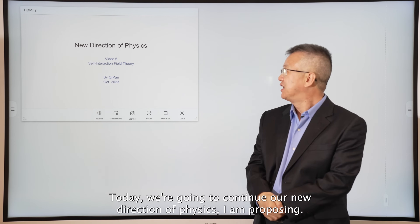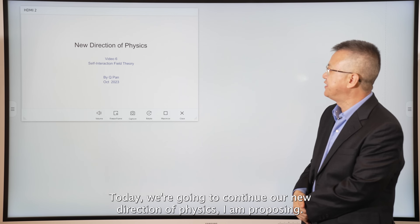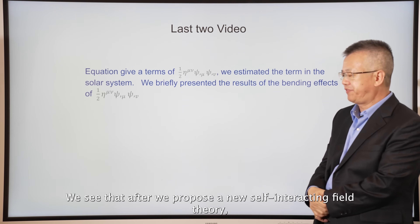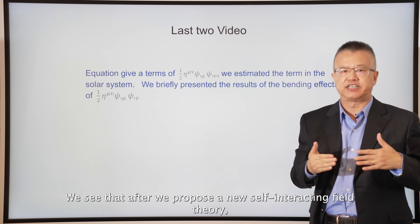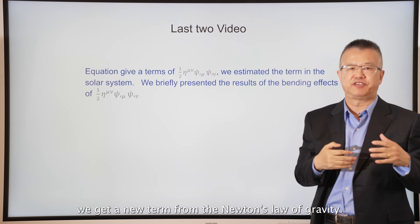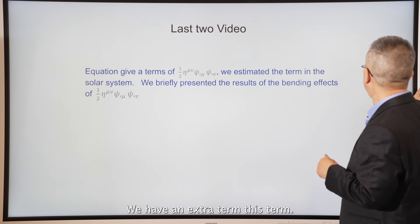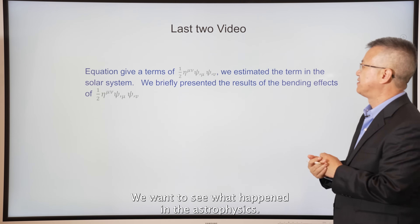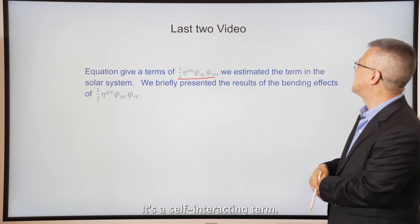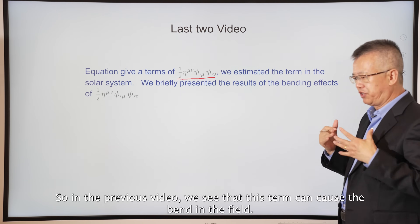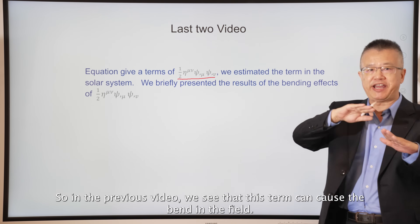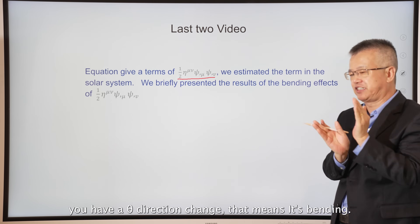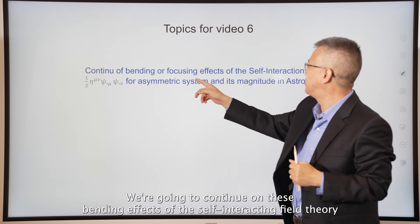Today we're going to continue our new direction of physics I'm proposing. The theory is a self-interacting field theory. After we propose this new self-interacting field theory, we get a new extra term from Newton's law of gravity. This term appears in astrophysics - it's a self-interacting term. In the previous video we saw that this term can cause bending of the field, a force with a theta direction change.